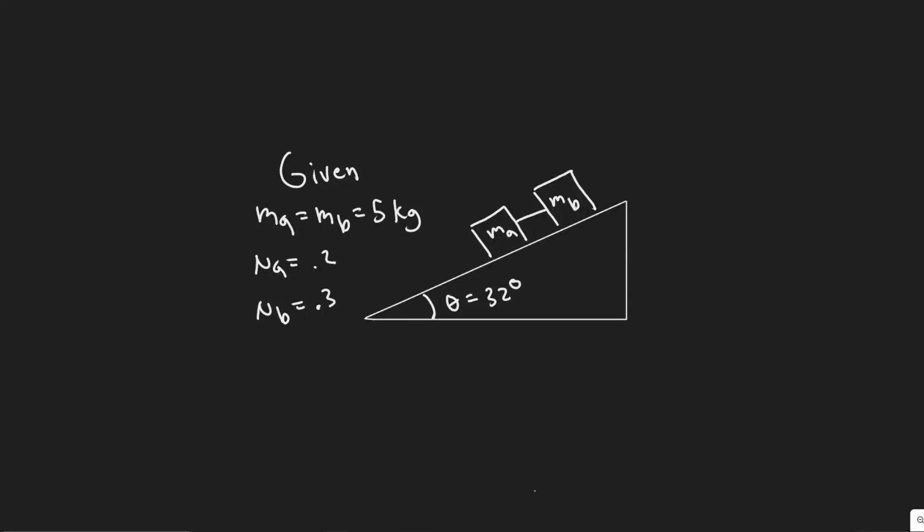In this problem we're told two blocks made of different materials connected together by a thin cord slide down a plane ramp inclined at an angle theta to the horizontal. Block B is above block A. The masses of the blocks are ma and mb, and the coefficients of friction are mu sub a and mu sub b. If ma equals mb equals 5 kilograms, mu sub a is 0.2, and mu sub b is 0.3, determine (a) the acceleration of the blocks and (b) the tension in the cord for an angle theta equals 32 degrees.